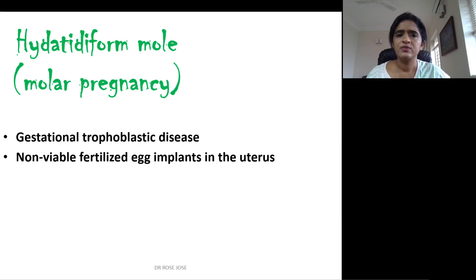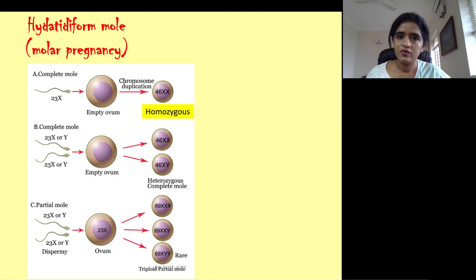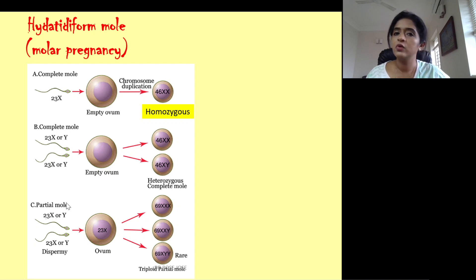Hydatidiform mole, or molar pregnancy, is a gestational trophoblastic disease where a non-viable fertilized egg implants in the uterus — the implanted conceptus is not viable and will not result in a baby. There are two main types: complete mole and partial mole. In a complete mole the ovum is empty and no fetal parts are obtained, whereas in a partial mole the ovum contains genetic material and some fetal parts may be present.